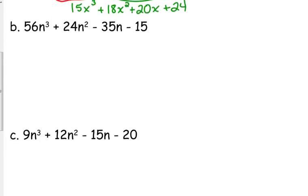Let's look at B. 56n cubed plus 24n squared minus 35n minus 15. It does not have an overall GCF. So let's go ahead and pair them up. So 56 and 24. 56 and 24 are both divisible by 8. So we want to take that out. And then we've got n cubed and n squared. So 8n squared is our GCF there. 56 divided by 8 is 7. N cubed divided by n squared is n. 24 divided by 8 is 3. And we took out the n squared.